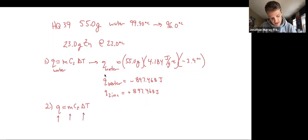The specific heat of zinc is my unknown. So the Q for zinc: it absorbs 897.468 joules, the mass of zinc is 23 grams, the specific heat I don't know, and for the delta T, the zinc starts at 22 degrees.